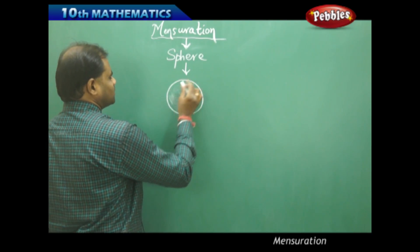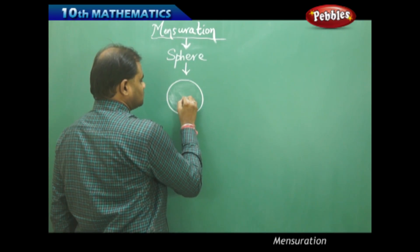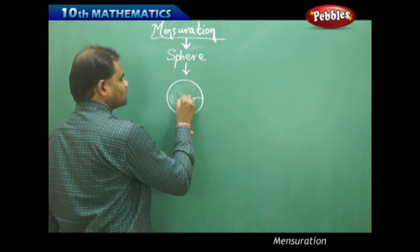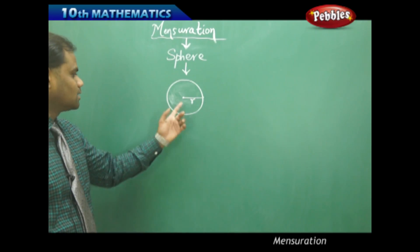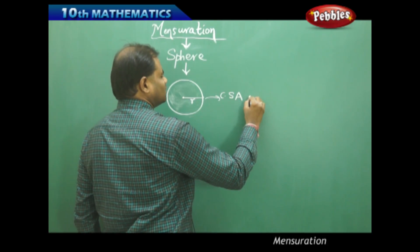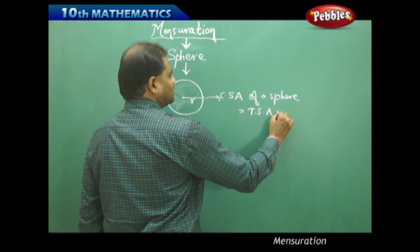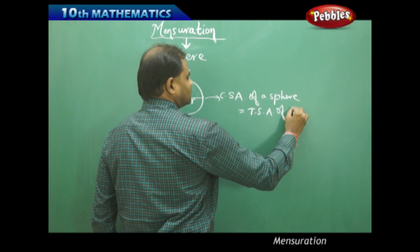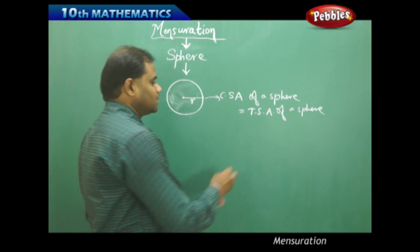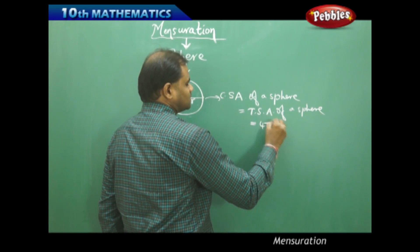This is a sphere — a globe, a football, or a cricket ball. If the internal radius is r, the distance from the center to any point on the surface is r. The curved surface area of a sphere equals the total surface area, and both are equal to 4πr².